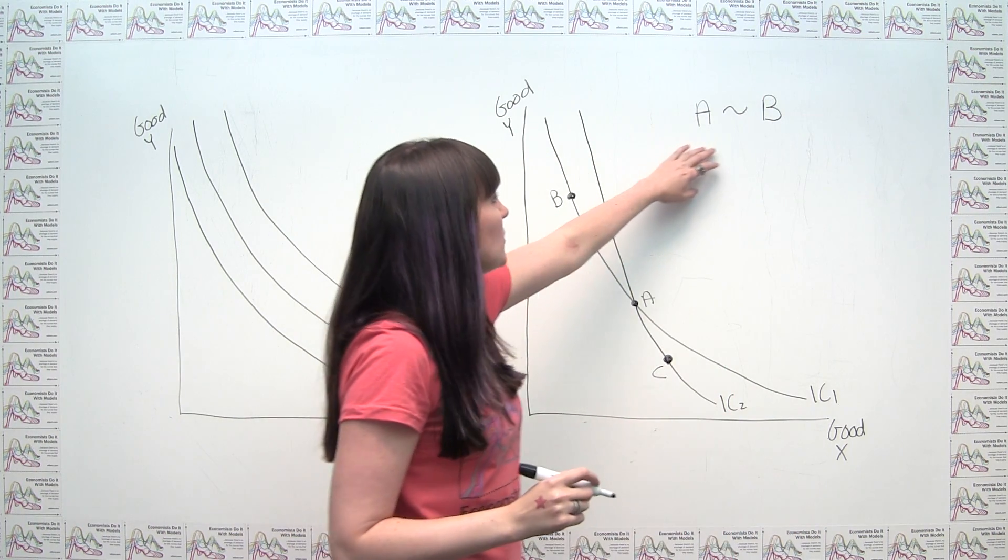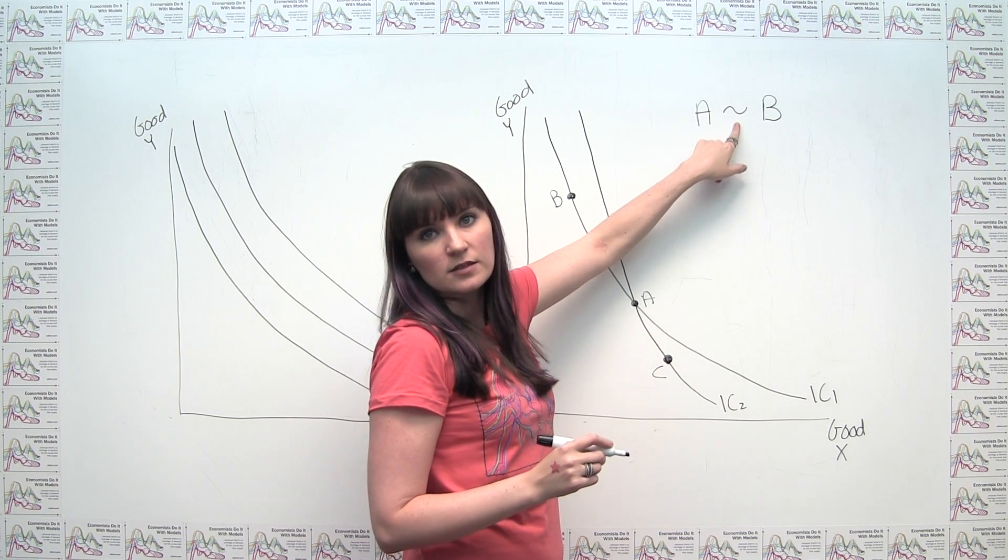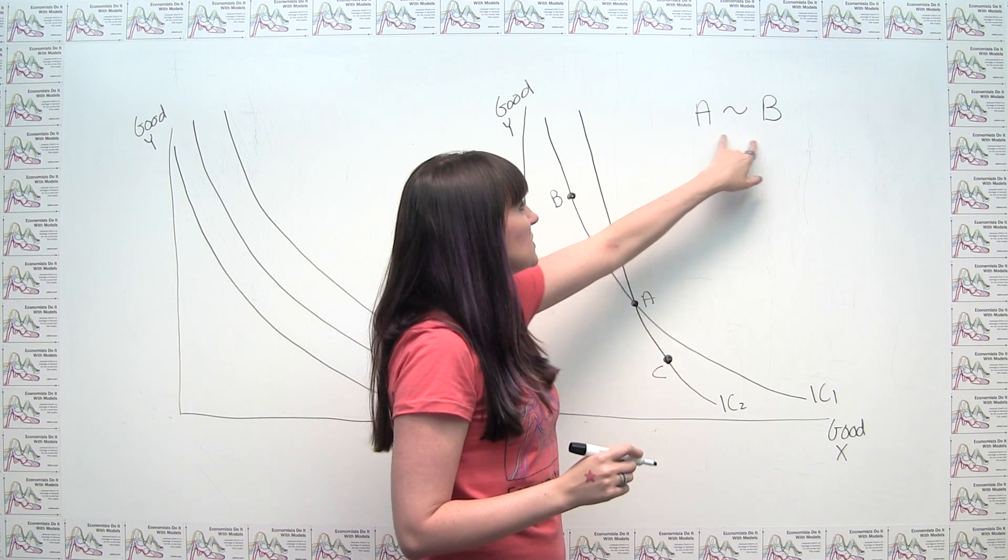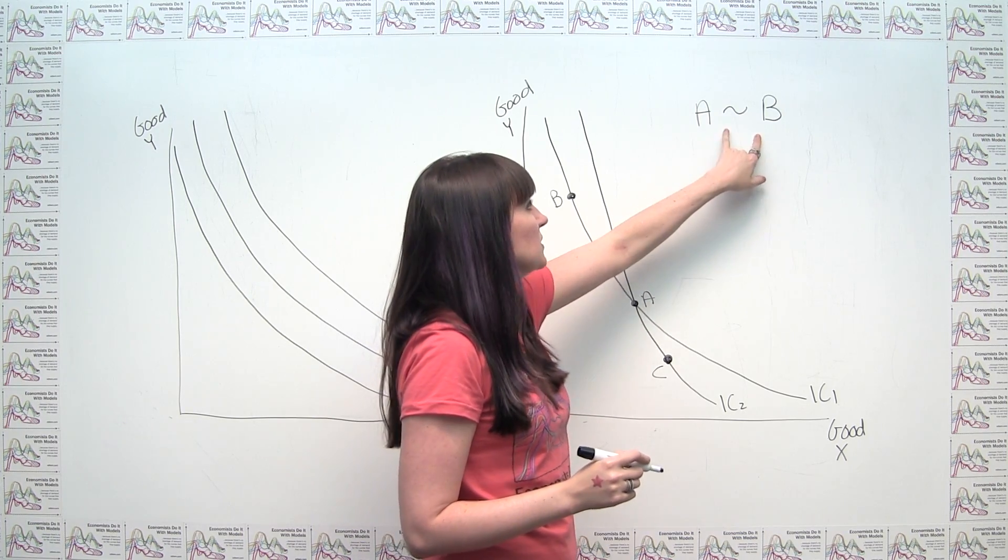And in economics, some books do this formally and others don't, the indifference operator is just this little tilde or squiggly guy here. So this is how we would write mathematically or in economic terms the word indifferent between A and B.